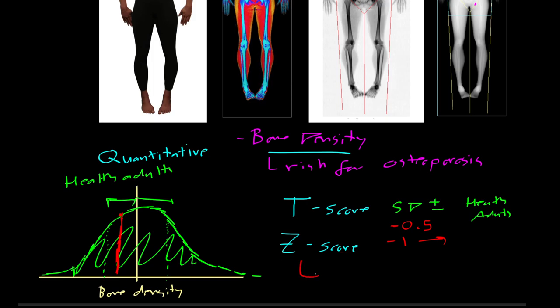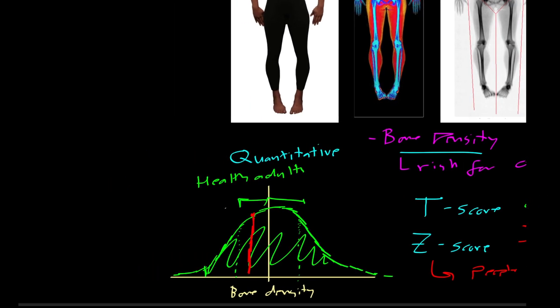Z-score is exactly the same thing, except it's normalized to people your age. And I think it might be sex normalized too, so it might be separate for men and women. Because as people get older, if you did the same experiment, get a thousand healthy 70 year olds and made a histogram of their bone density, it would probably be like this. Because on average, you do lose bone density throughout your life.